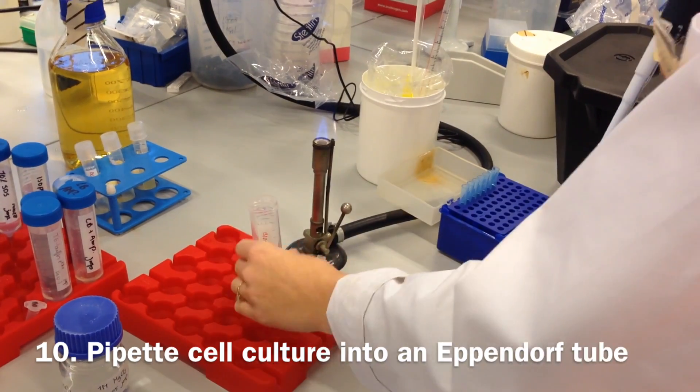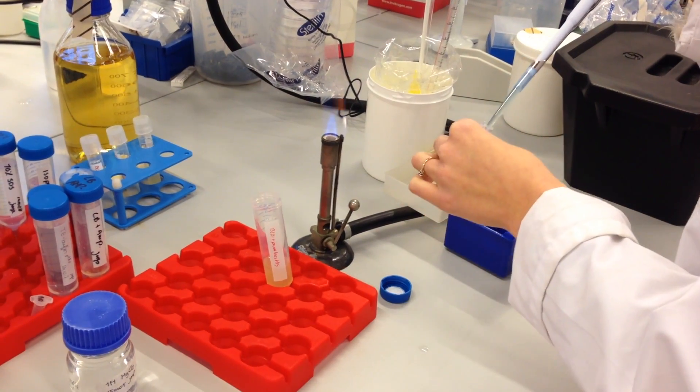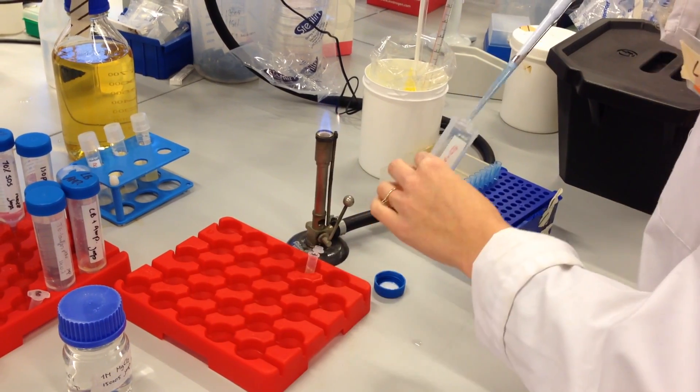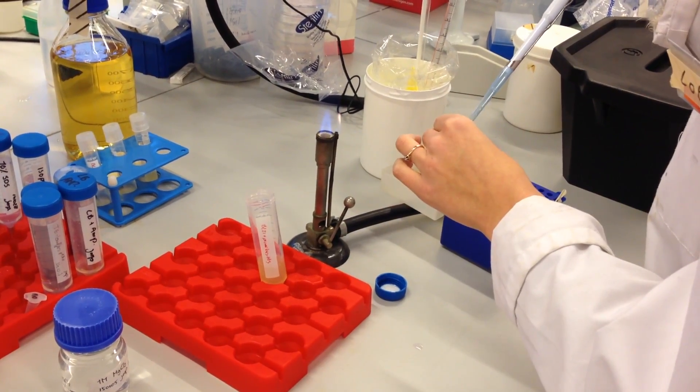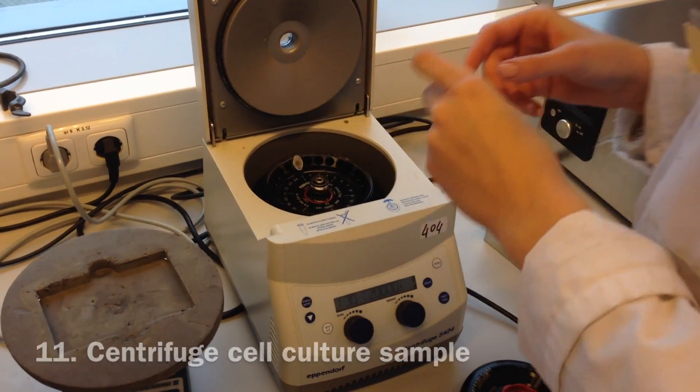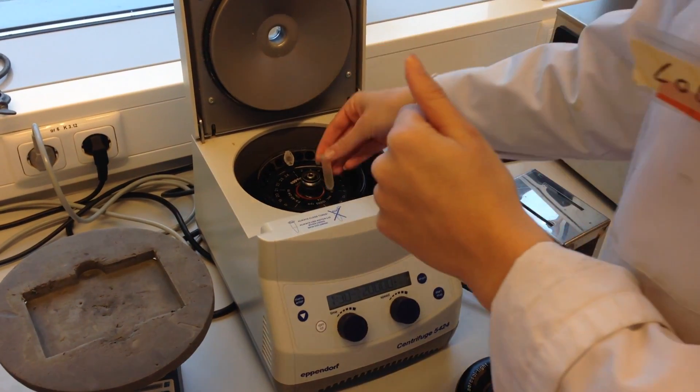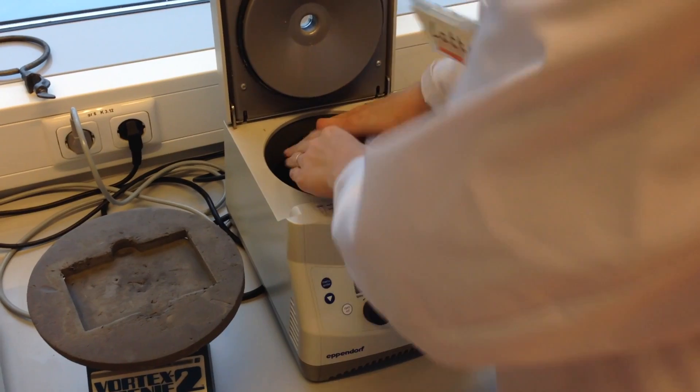Pipet 2 mL of cell culture into a 2 mL eppendorf. To separate the cells from the medium, the eppendorf is centrifuged for 2 minutes. Do not forget to balance the centrifuge with an eppendorf containing equal amounts of water.